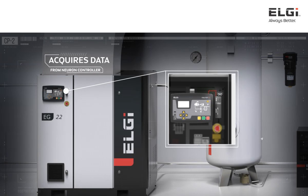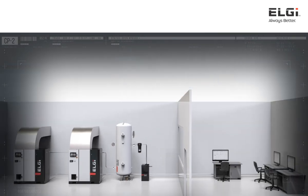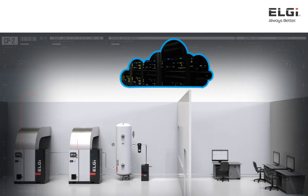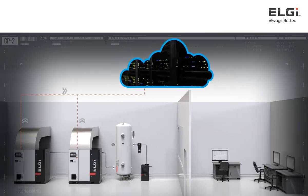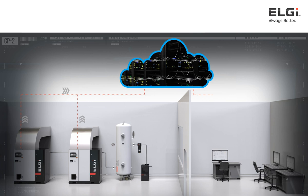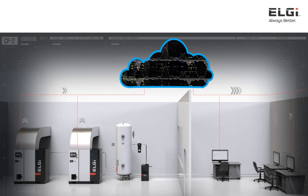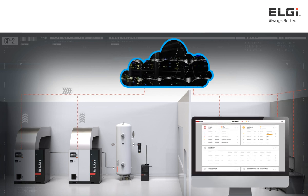LG AirAlert acquires operational and performance data from LG's Neuron Controller and transmits the data in an encrypted form to secure and dedicated AirAlert servers in the cloud. Meanwhile, smart algorithms work on the data to enable intelligent prediction. These are sent back securely to the operators as actionable reports and trends in the form of easy-to-read dashboards.